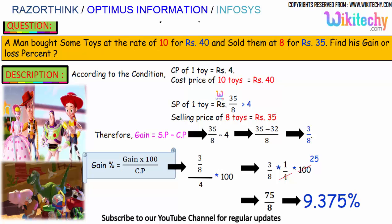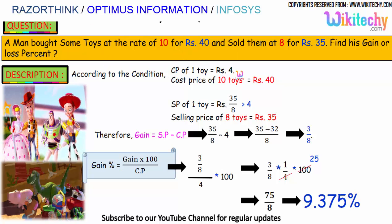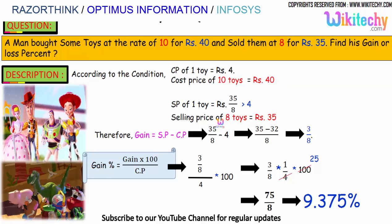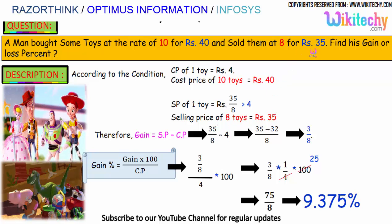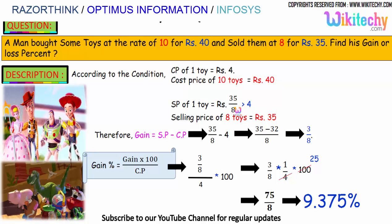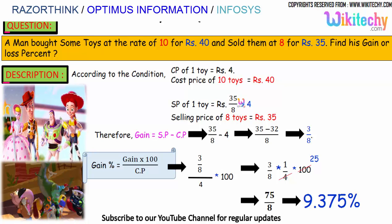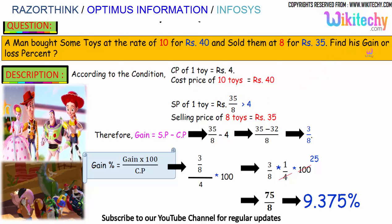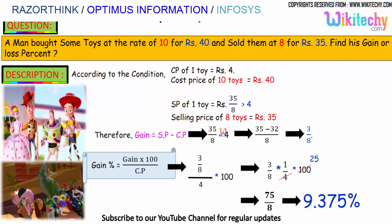According to the condition, the cost price of 1 toy is 4 rupees — the cost price of 10 toys is 40 rupees. The selling price of 8 toys is 35 rupees, so the selling price of 1 toy is 35 divided by 8, which is greater than 4. So it should be a gain for him — the answer is gain, not loss.